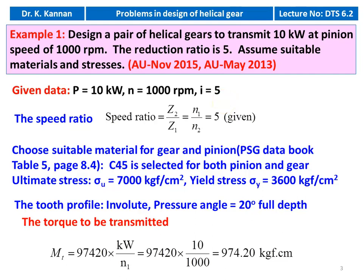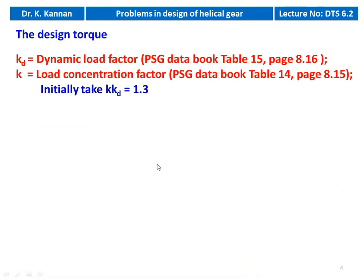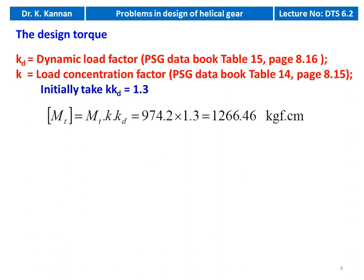We calculate the torque to be transmitted: Mt = 97420 × power in watts / pinion speed = 97420 × 10 / 1000 = 974.2 kg/cm. To calculate the design torque, we require the KKD value — load concentration factor and dynamic load factor. Initially we assume KKD = 1.3. Design torque [Mt] = Mt × KKD = 974.2 × 1.3 = 1266.46 kg/cm.